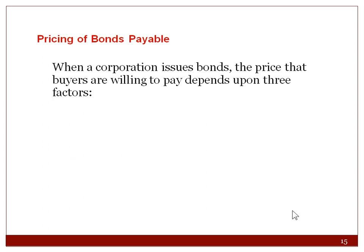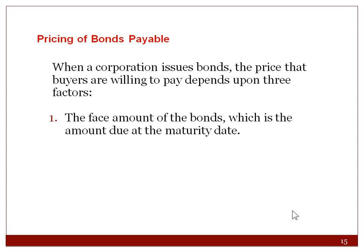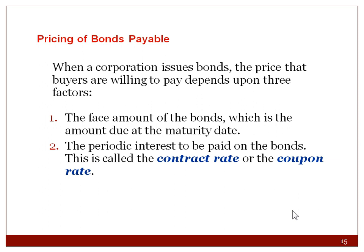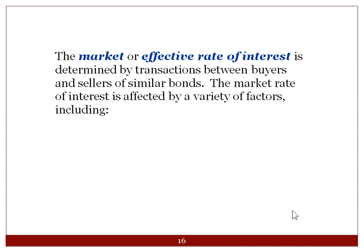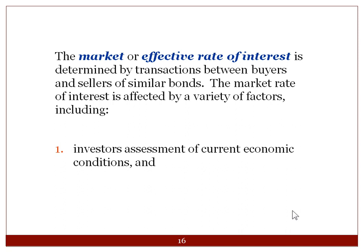When a corporation issues bonds, the price buyers are willing to pay depends on three factors: the face amount due at maturity, the periodic interest — called the contract rate or coupon rate — and the market or effective rate of interest. The market rate is determined by transactions between buyers and sellers of similar bonds and is affected by investors' assessment of economic conditions and future expectations, just like stock trading on a stock exchange.